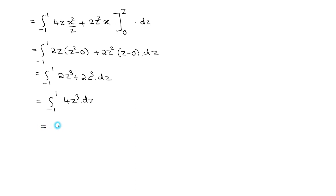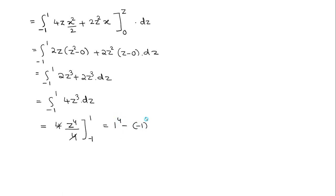Integrating 4z³ with respect to z gives 4z⁴/4 = z⁴, evaluated from minus 1 to plus 1. So 1⁴ minus (minus 1)⁴ = 1 minus 1 = 0. Therefore, the value of the given integral is I = 0.